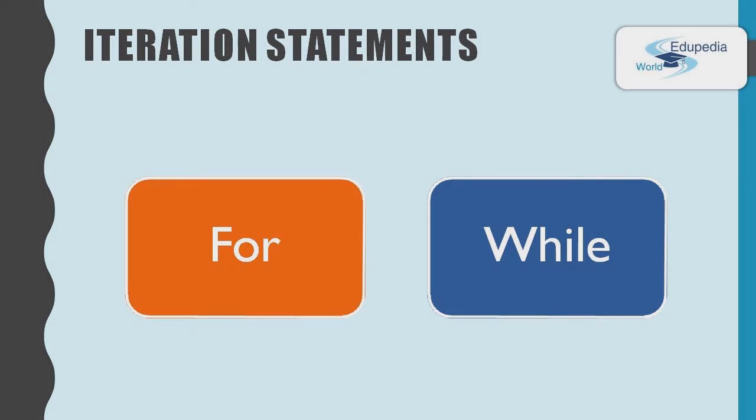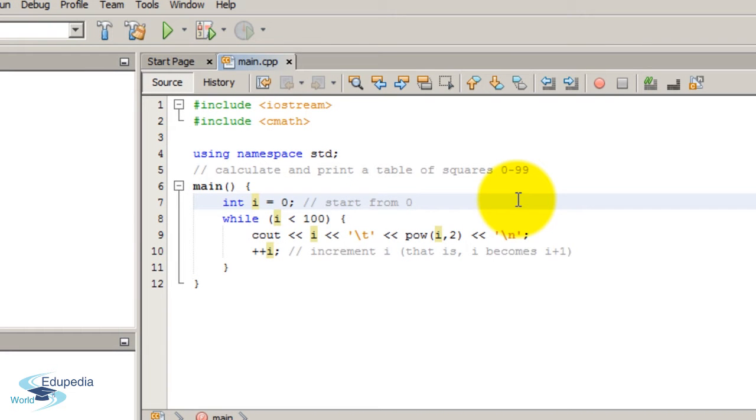Take a look at this program. We defined an int variable i and initialized it with the value 0. And this is our while loop. In this while loop it has a condition i less than 100.